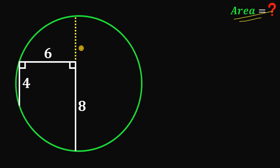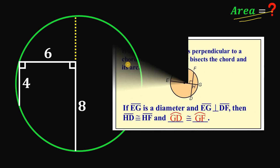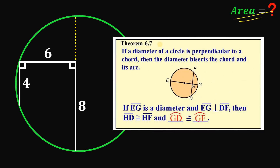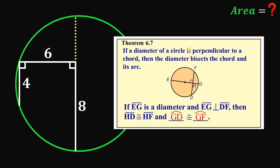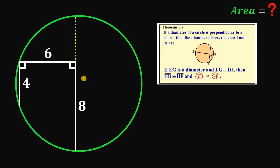What we're going to do is use this theorem: if a diameter of a circle is perpendicular to a chord, then the diameter bisects the chord and its arc. The key part we'll use here is that the diameter bisects the chord. Let's draw the diameter of this circle that is perpendicular to the chord.